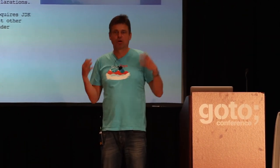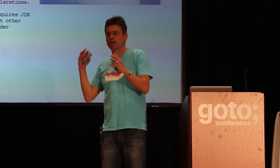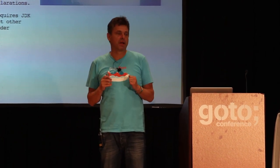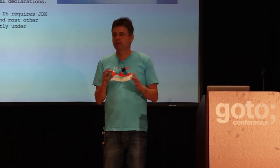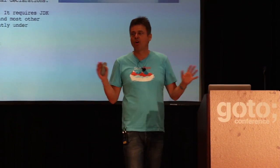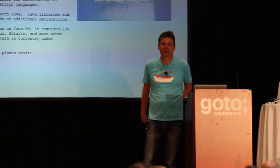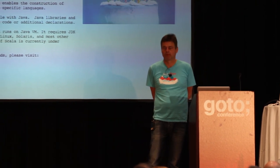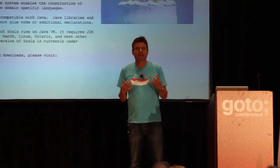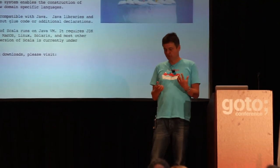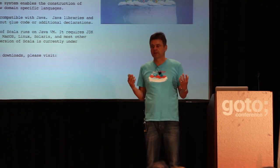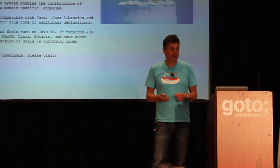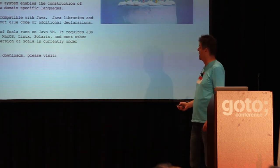Until then, the object-oriented dogma — which was very strong and everybody believed in — was that you should put your methods where your data is: object-oriented encapsulation. If you proposed something else, you were a complete heretic. When XML came out, it was the poster child for why functional programming might be useful, because you couldn't put methods into an XML tree. XML was pure data, but you still had to analyze and parse it, and pattern matching was very good for that.